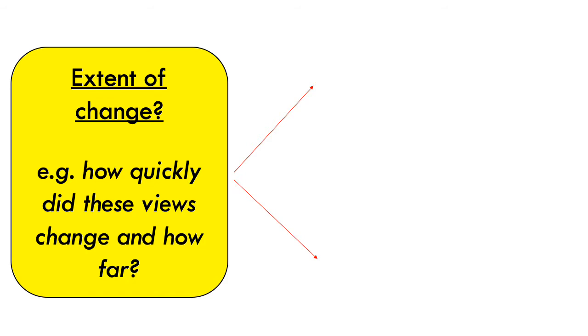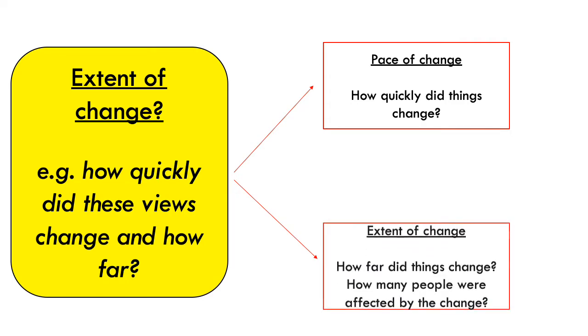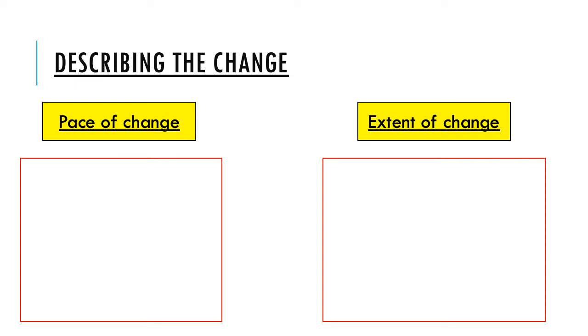Now in terms of doing that, we are going to break this down into two main sections. If you are looking at something that has changed, we are interested firstly in the pace of change, by which we mean how quickly did things change. There will be loads of examples in history, in life in general, where things have changed and they have changed at different speeds. So sometimes things take a long time to change, sometimes things change quite quickly. Then we need to be able to use some nice descriptive language to help us describe the pace of these changes, how quickly these changes are going about.